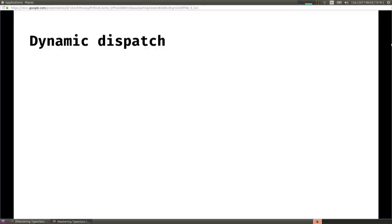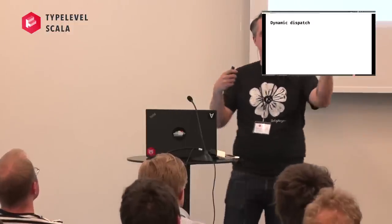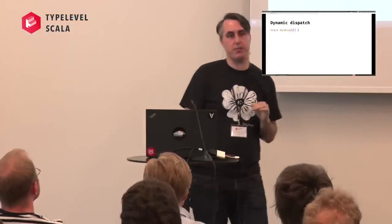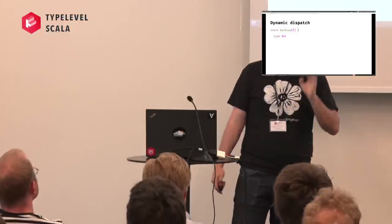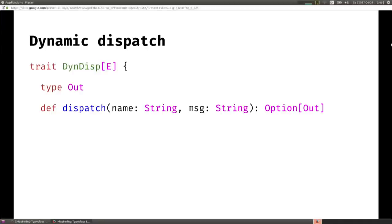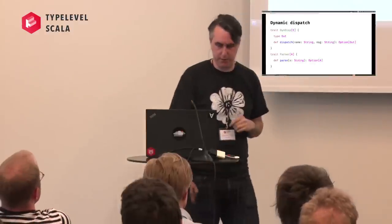Remember we had this dynamic dispatch problem - some event called click and we needed to parse it as a click; if it didn't match, go to the next one, and so on. To solve this with type class induction, we're going to create a new type class called DynamicDispatch. It has a path-dependent type called Out - which is going to be the result of your dispatch - and a method called dispatch that takes a name string (the event name) and a message (the payload) and returns an Option[Out]. We'll also assume there's some kind of parser available.